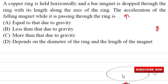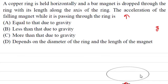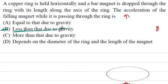Due to this upward opposing force, the net acceleration of the magnet is less than the acceleration due to gravity alone. Therefore, the acceleration of the falling magnet while passing through the ring is less than that due to gravity. This is the correct answer.